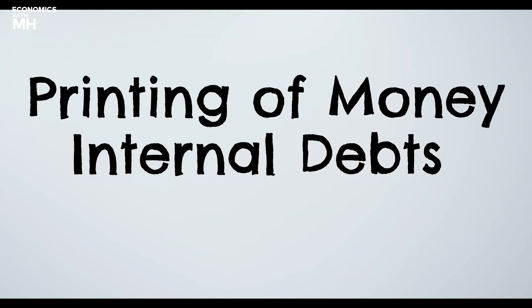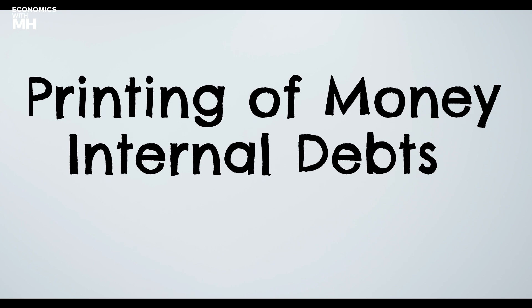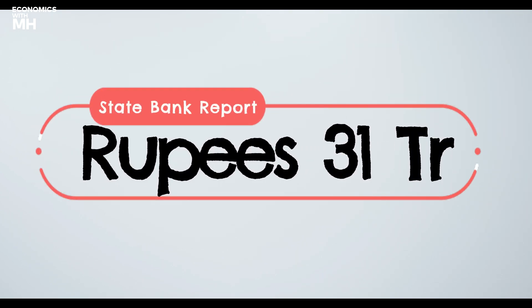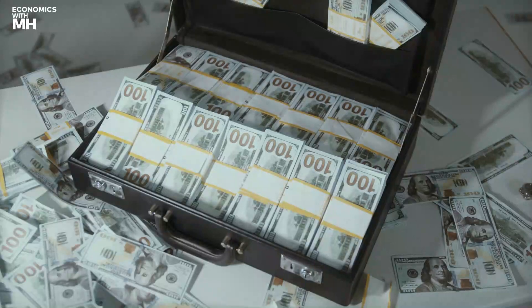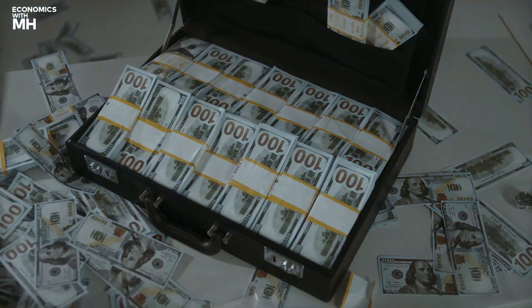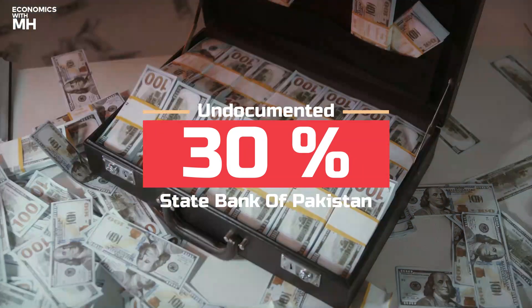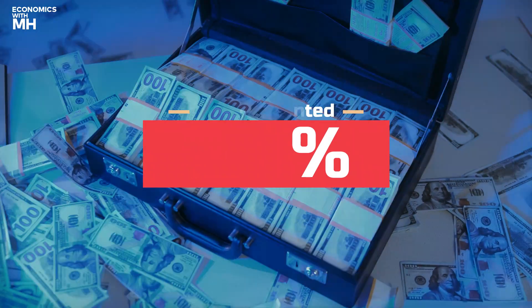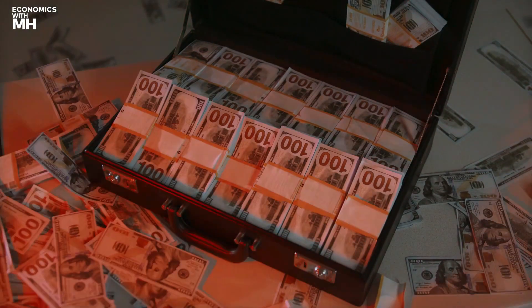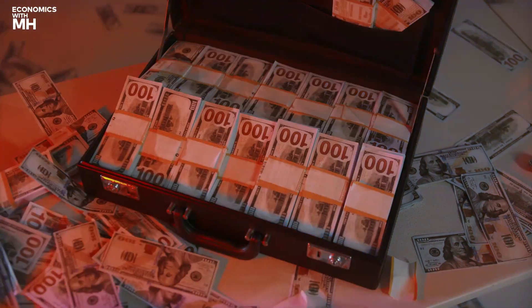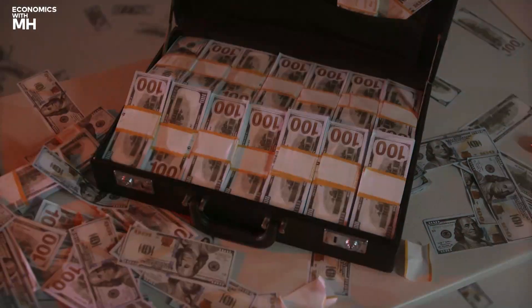Now, inflation due to increased money supply. Money supply mostly comes from printing of money or internal loans. Pakistan's internal loans have reached 31 trillion rupees as per the State Bank report, which has been a major cause of increased money supply in the economy. But in Pakistan, mostly the velocity of money comes from black money and undeclared incomes. The State Bank claims that the informal or undocumented economy of Pakistan is not more than 30%, but some international reports claim it to be 40%, and some suggest it has reached as high as 70%.